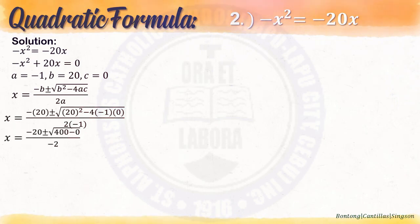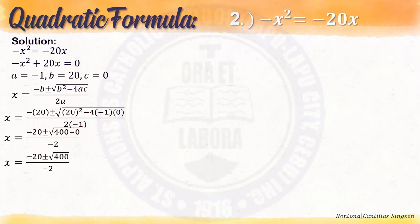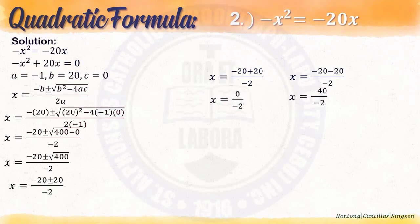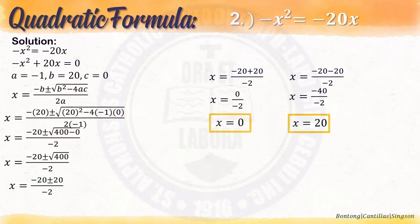Simplifying using PEMDAS: negative of 20 is negative 20. The square root of 20 squared is 400. Negative 4 times negative 1 times 0 is 0. And 2 times negative 1 is negative 2. So, 400 minus 0 is 400. We get x equals negative 20 plus or minus square root of 400 over negative 2, which simplifies to x equals negative 20 plus or minus 20 over negative 2. For x: negative 20 plus 20 is 0, divided by negative 2 is 0. And negative 20 minus 20 is negative 40, divided by negative 2 is 20. So the values of x are 0 and 20.